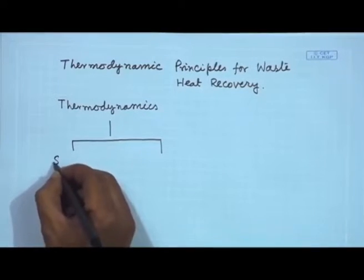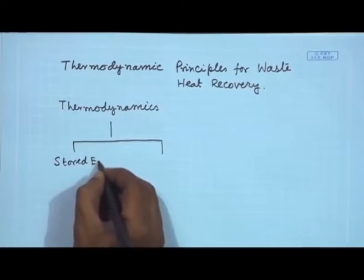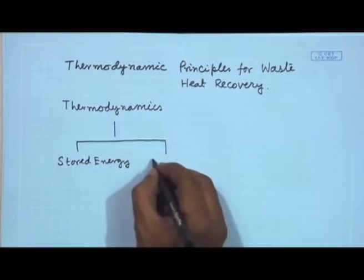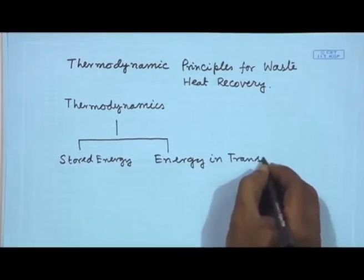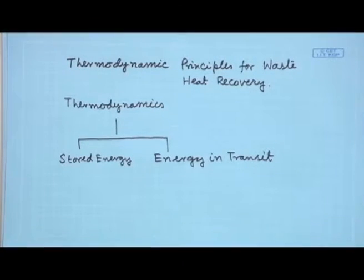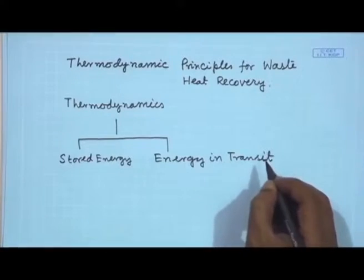Thermodynamics recognizes only two forms of energy. One is stored energy and another is energy in transit. Stored energy is generally associated with the mass of a substance, and energy in transit — we come across energy in transit whenever there is an interaction. Interaction between whom? Interaction between the system and the surrounding. In thermodynamics, this concept of system and surroundings is very important.